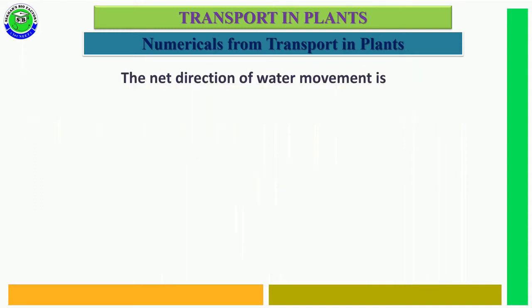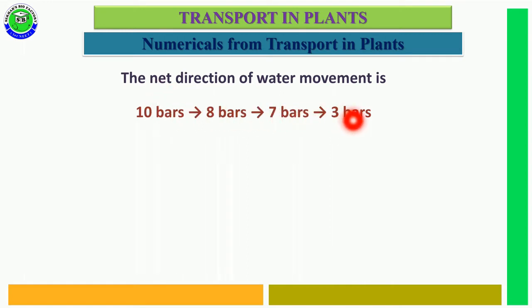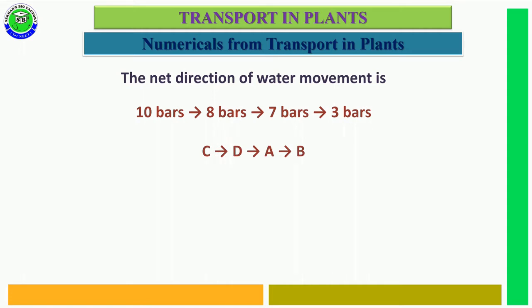Based on these water potential values, the net direction of water movement is from high to low water potential: from 10 bars to 8 bars, 8 bars to 7 bars, 7 bars to 3 bars. So water moves from cell C to D, D to A, and A to B.